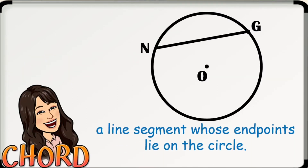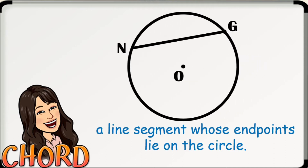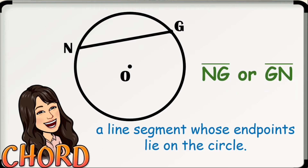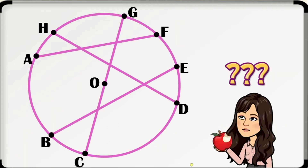Next, we have the chord, which is a line segment whose endpoints lie on the circle. In circle O, the chord is segment NG or segment GN. Is segment HD a chord? Yes, segment HD is a chord. How about segment AF? Correct, segment AF is also a chord of circle O. And how about segment BE? Yes, definitely, segment BE also satisfies the definition of a chord.